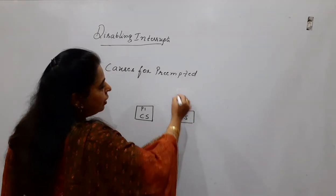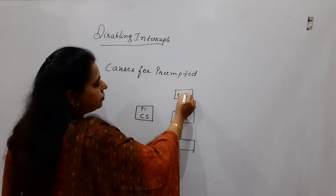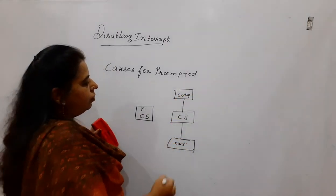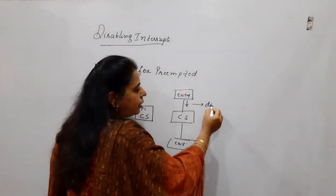For this particular concept, I can explain you in this manner. If this is the critical section, the entry section is there, the exit section is here. When it is about to enter into the critical section, it has to disable the interrupts.